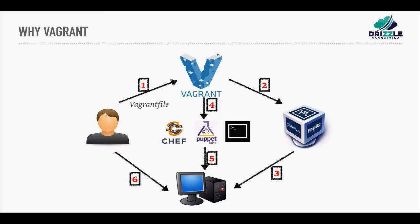Then Vagrant will automatically run this on your behalf and your environment would be ready for you to use. This flow, as simple as it looks, is the reason why Vagrant is in place — because Vagrant controls and manages the orchestration between creating the environment on VirtualBox, obtaining the latest operating system, then running a script or more to build the environment or the stack that you're going to need. It also gives you the capability to update, upgrade, or even destroy the whole environment if you need.